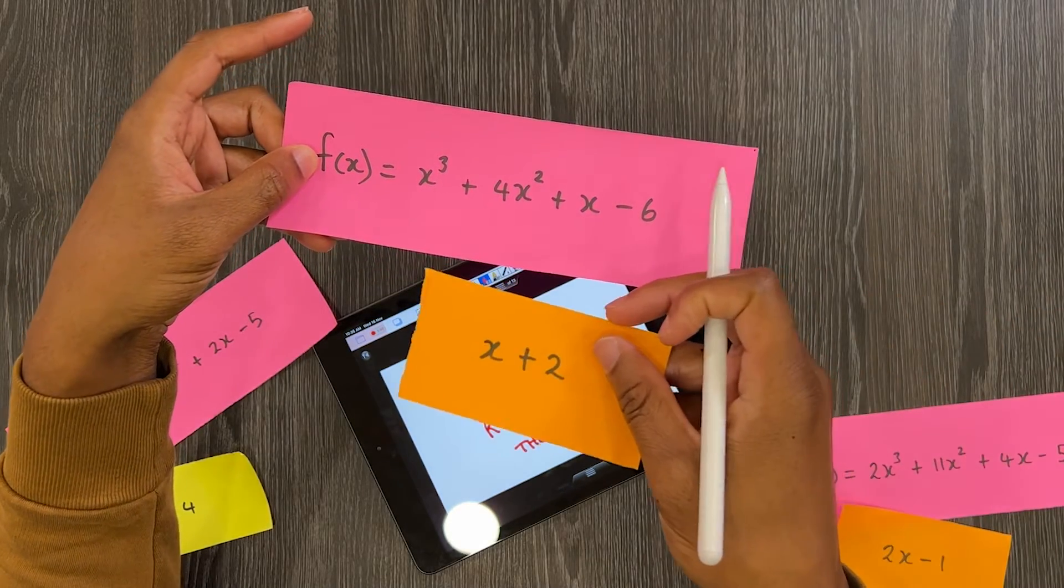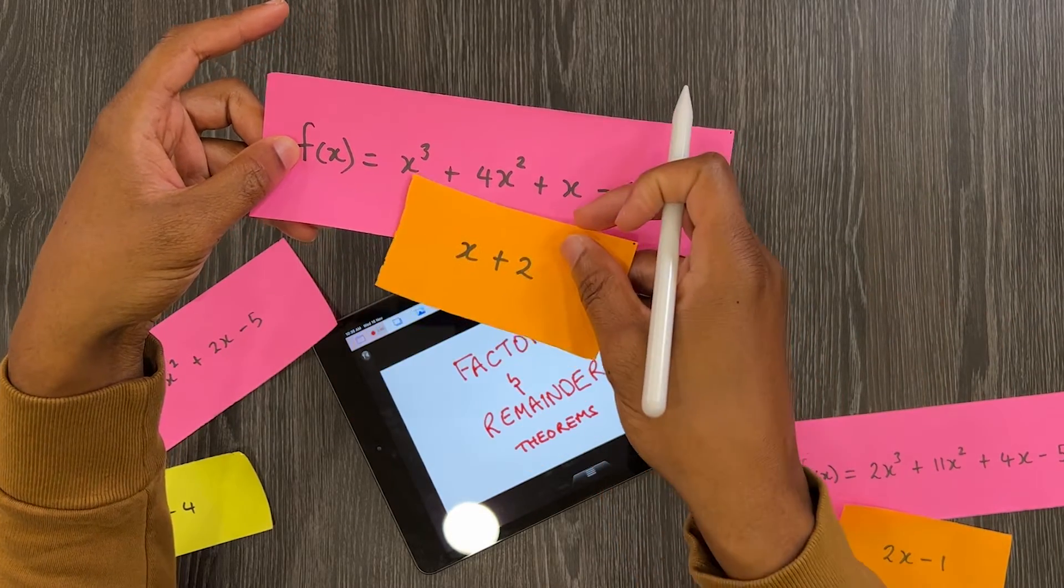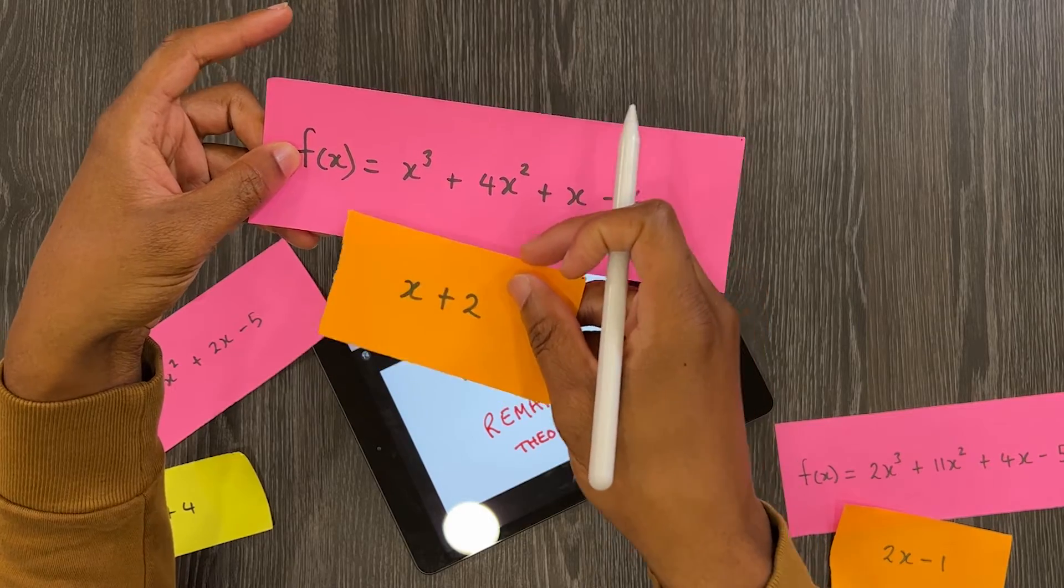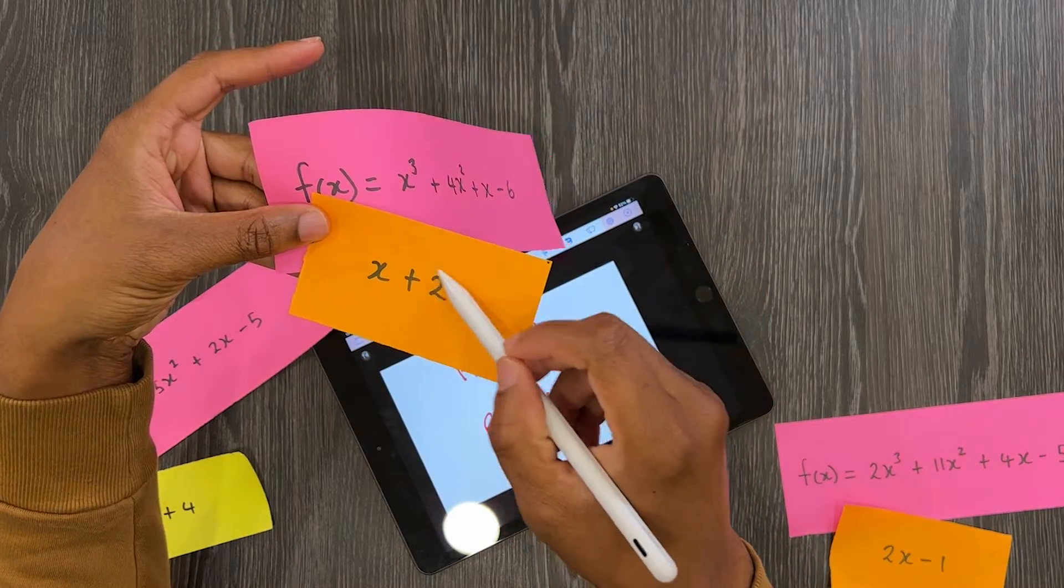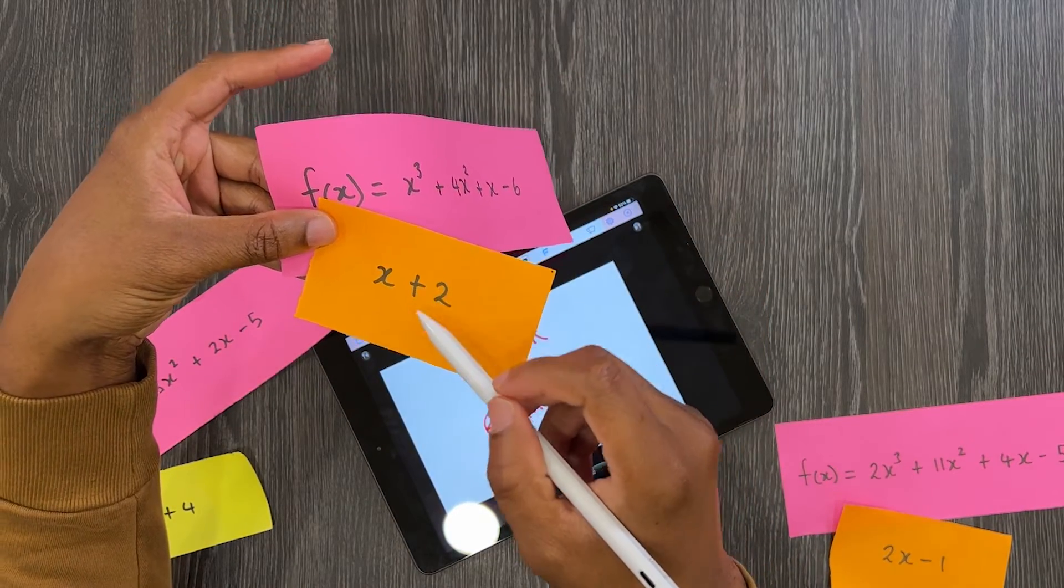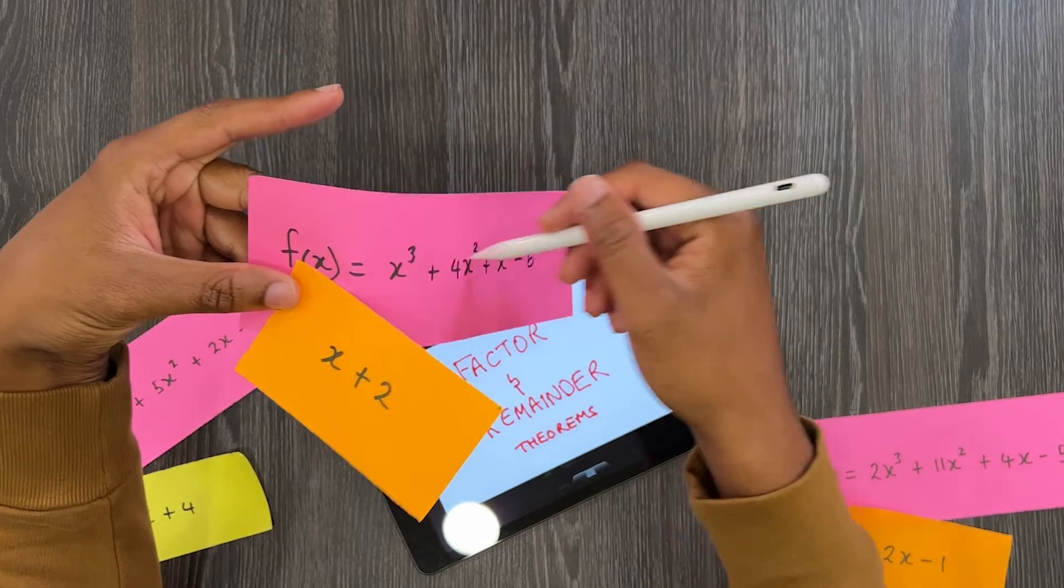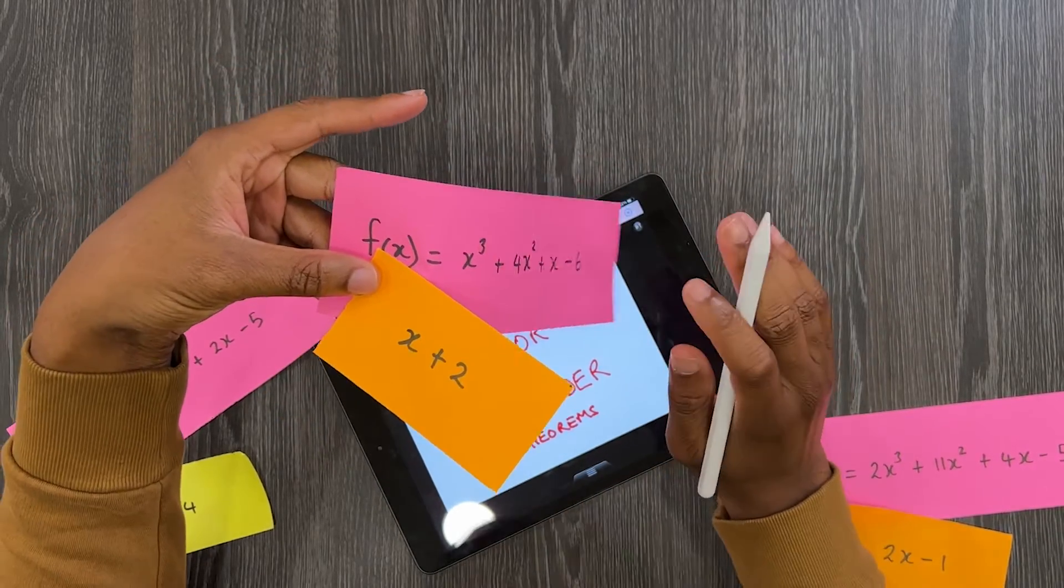Well, then we can just take this 2 and change it into negative 2, substitute it into the function, and we should get zero. That is the factor theorem.